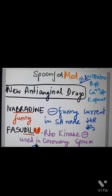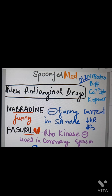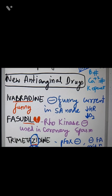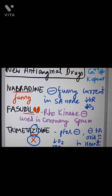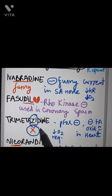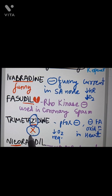Next we have fasudil. It's a heart, and here it is broken — hence it is crying. 'Rho' means cry in Hindi, so it's a Rho kinase inhibitor. It's used in coronary spasm.